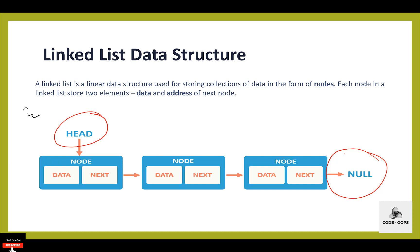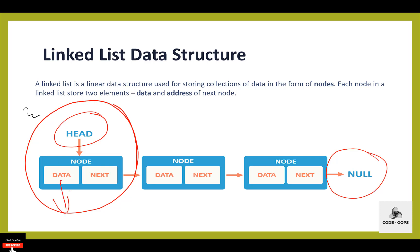Unlike array, the elements are not stored in continuous memory location in a linked list — they are stored in a random location. Random allocation of memory location helps to add any number of elements to the linked list. Linked list does not waste memory space. In a linked list, every node is divided into two parts: the first part holds the information and the second part holds the address of the next node to be processed.